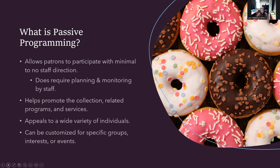Although there is little staff direction involved, passive programs do require staff planning and monitoring. One of the benefits of passive library programs is that they appeal to a wide variety of individuals, from preschoolers to adults. This means running passive library programs is a powerful go-to strategy for libraries, especially for solo-staffed libraries. Passive programs can also be customized for specific groups, interests, or events, such as National Donut Day, which is June 7th.